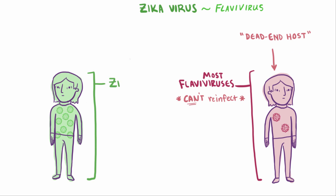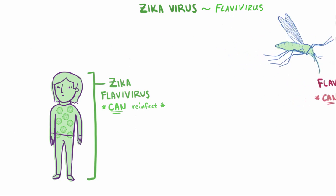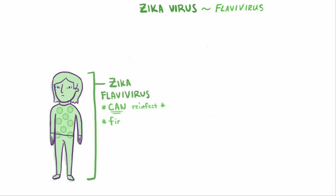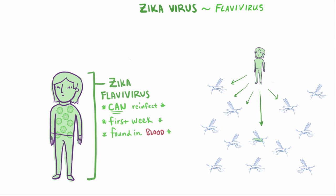However, the Zika virus, along with yellow and dengue fever, is well enough adapted to human hosts such that it can multiply to a point where it can reinfect another unsuspecting mosquito, which can then go on to infect more people. This window lasts for the first week of infection, during which the Zika virus can be found in the blood. So if humans with the disease can transmit back to mosquitoes, then areas with a lot of mosquitoes would be set up for spreading the virus super quickly.